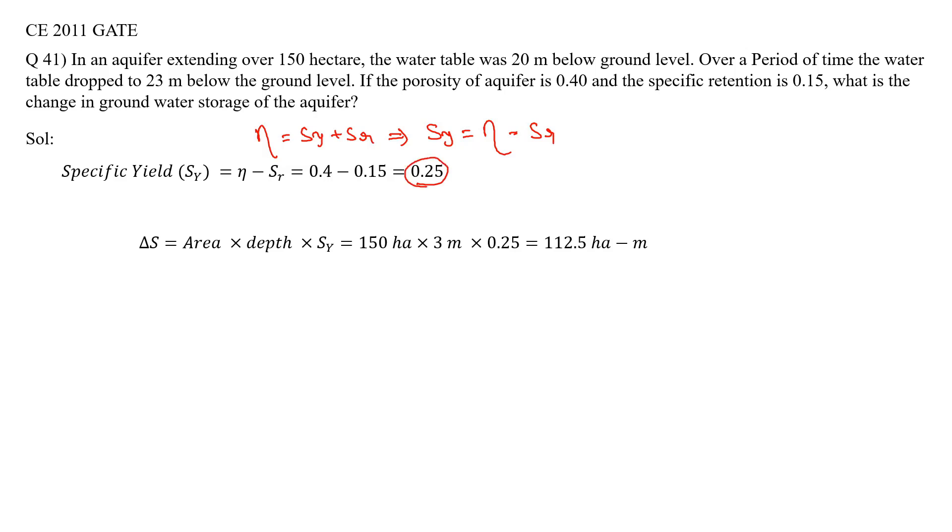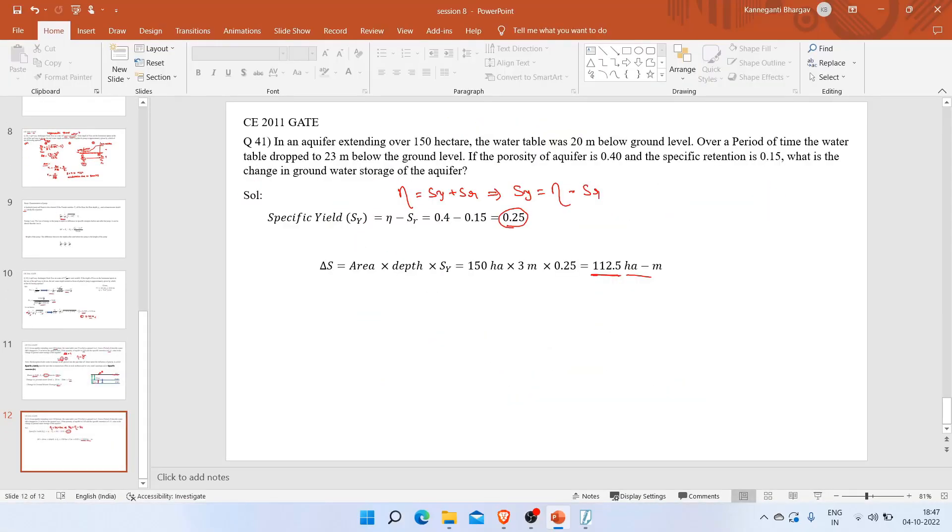Observe the options - they ask for hectare-meters. Delta S equals area times depth times Sy, which is 150 hectares times 3 meters times 0.25, giving 112.5 hectare-meters. This is a very straightforward question. I hope it is clear, that's all from my side for this.